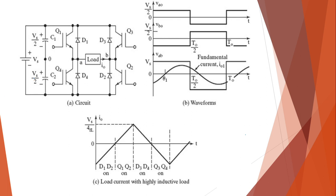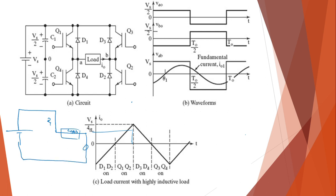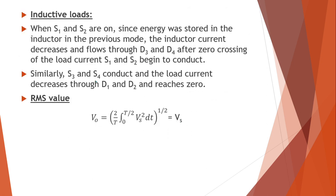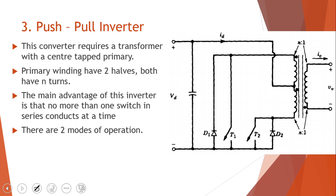One thing to note is that for whichever circuit you are drawing — whether for resistive or inductive load — you always have to draw the equivalent circuits. For the resistive load mode 1: the supply goes through Q1, then through the load, through Q2, and back. For the RL load, you will have four modes of operation. You can derive an equation for the RMS value, which gives Vs.